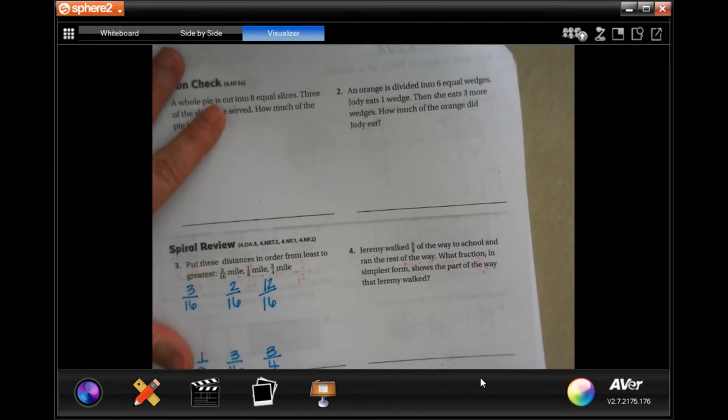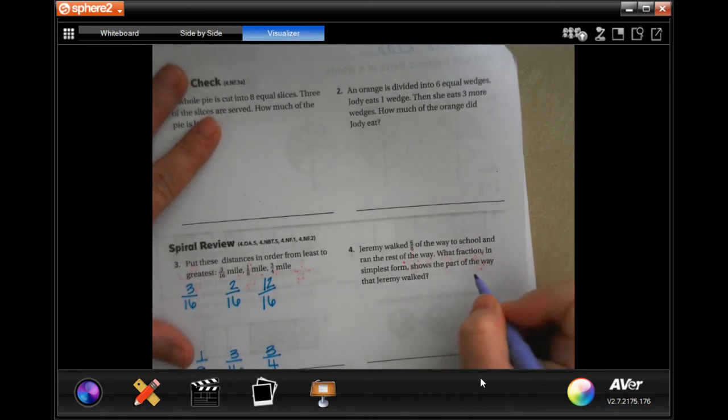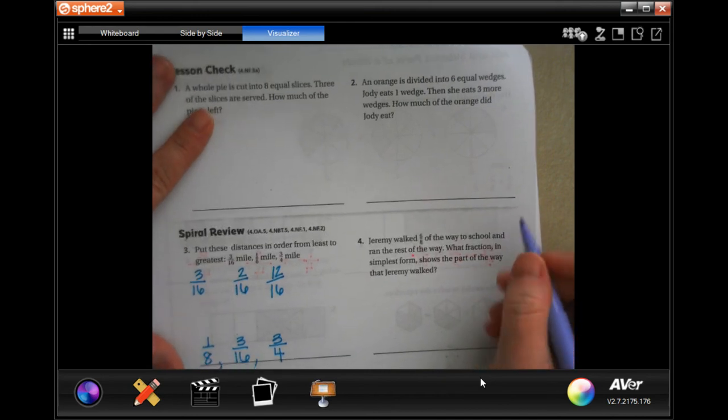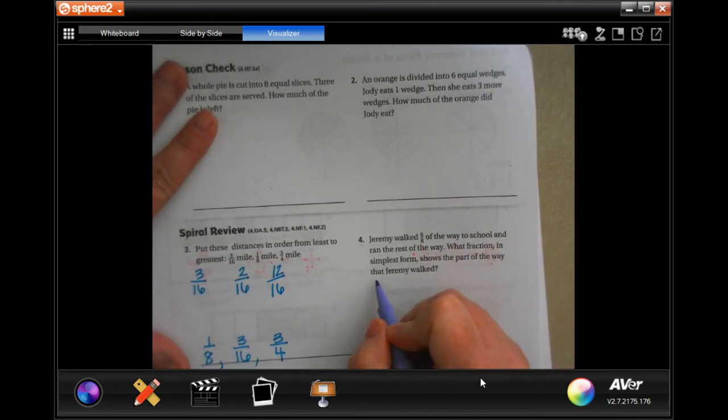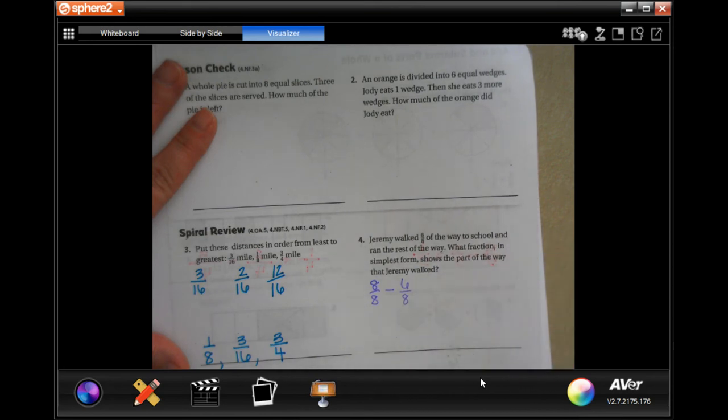Jeremy walks six eighths of the way to school and ran the rest of the way. What fraction in the simplest form shows the way Jeremy walked? Well, eight over eight because that would be the whole way minus six over eight because that's how much he walked.